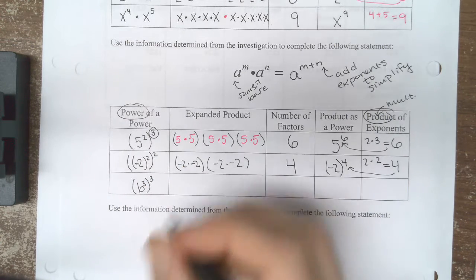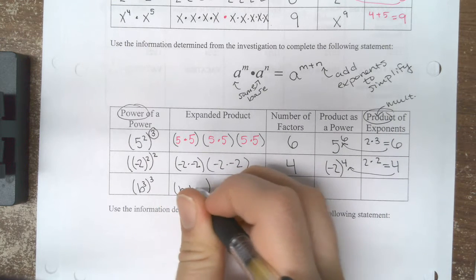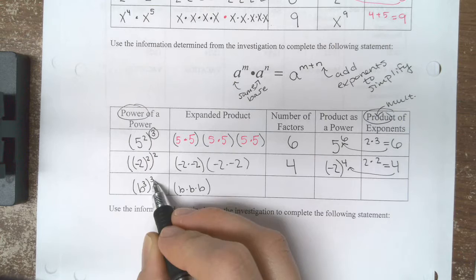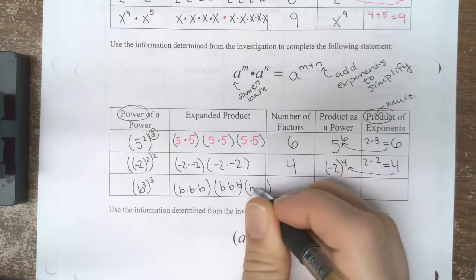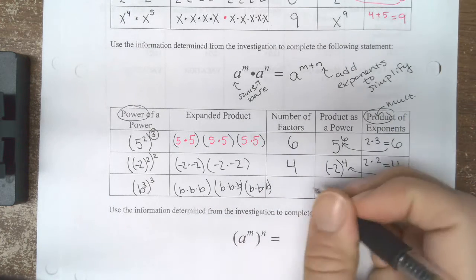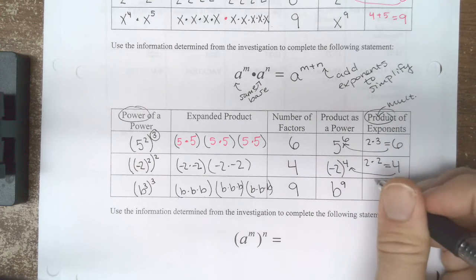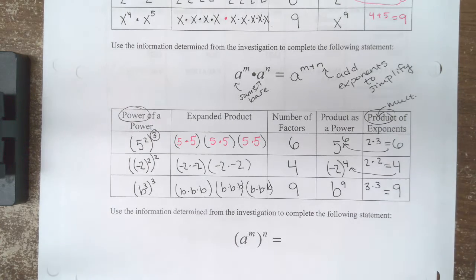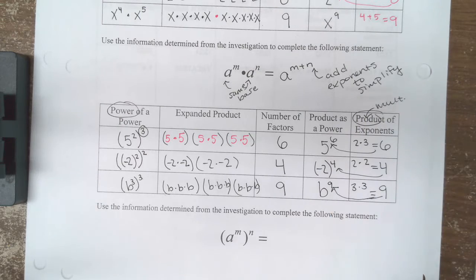If I had variables, so let's say I had B cubed cubed, inside this parenthesis B cubed means I have 3 factors of B, and I have those 3 factors of B 3 times. Which means all together if I expand that, I can see 9 factors of B. I could have written as B to the 9th, and multiplying my exponents gives me that new exponent of 9.